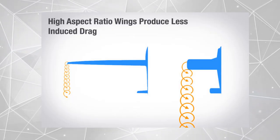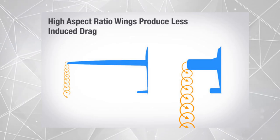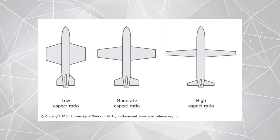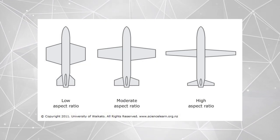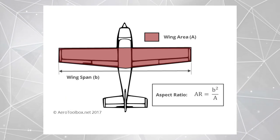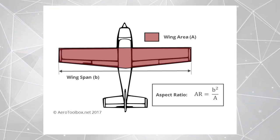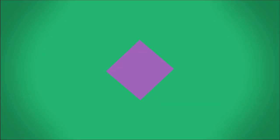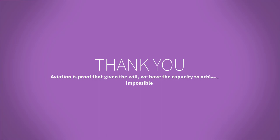Aspect ratio. It is defined as the square of the wingspan divided by its wing area. High aspect ratio wings produce less induced drag. The lift-to-drag ratio increases with aspect ratio, improving fuel economy in aircraft. Aspect ratio can be found by the formula: AR equals B squared divided by A.